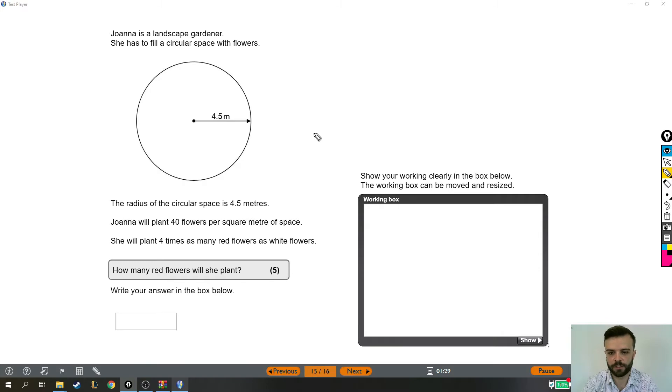The radius of the circular space is 4.5 meters, like it's shown. Joanna will plant 40 flowers per square meter of space. She will plant four times as many red flowers as white flowers. How many red flowers will she plant?